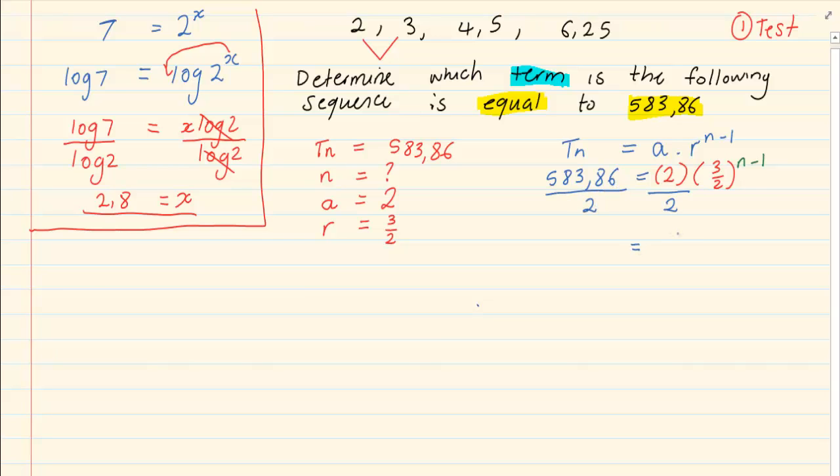So we have 3 over 2 to the power of n minus 1 is equal to 291.93. Now look at what we have. We have an exponent that is an unknown, but it is a number that we can't solve just like that. We can't see an answer as quickly. So the method to use is the same method that we would have used at this stage, the logs.